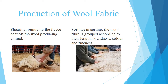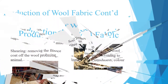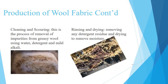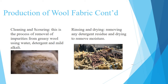Production of Wool Fabrics. Shearing: removing the fleece coat off the wool-producing animal. Sorting: the wool fiber is grouped according to their length, soundness, color, and fineness. Cleaning and scouring: the process of removal of impurities from greasy wool using water, detergent, and mild alkali. Rinsing and drying: removing any detergent residue and drying to remove moisture.